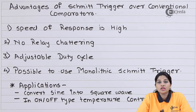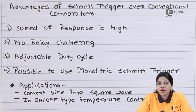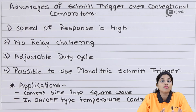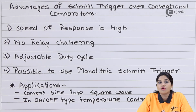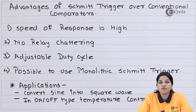These are some advantages of Schmidt trigger over the conventional comparator circuit. Now let's understand the various applications where we can use a Schmidt trigger circuit. Since Schmidt trigger is an application of comparator, it provides output as a square wave only. Therefore, Schmidt trigger is basically used to convert any type of waveform into a square waveform. In inverting and non-inverting Schmidt trigger configurations, the output waveforms are 180 degrees out of phase with each other, but both are square waveforms.